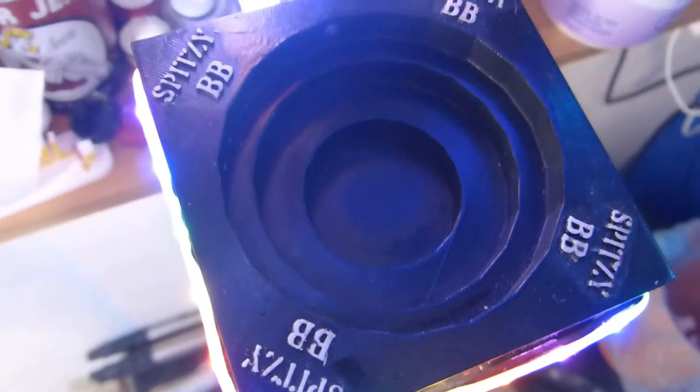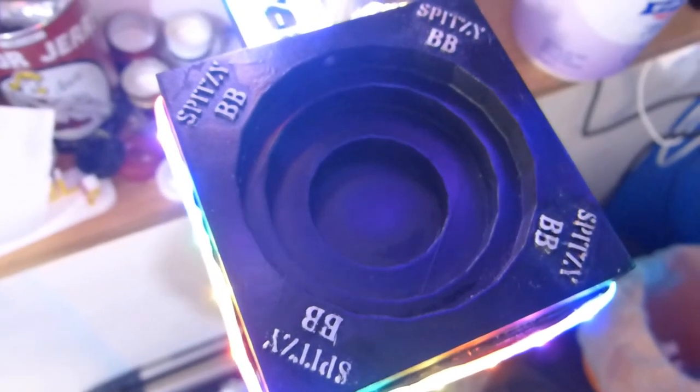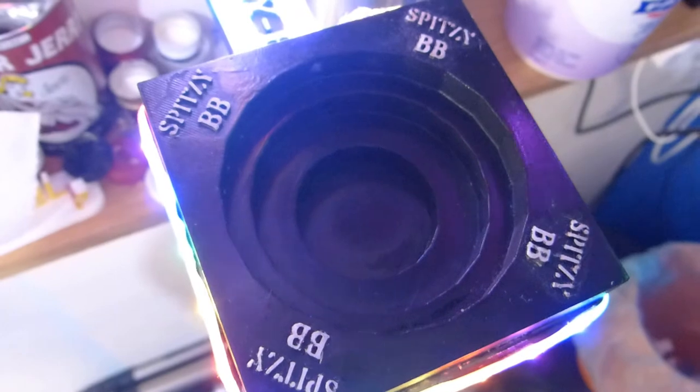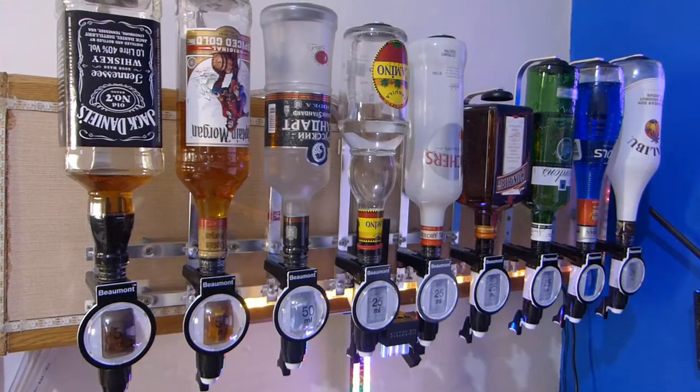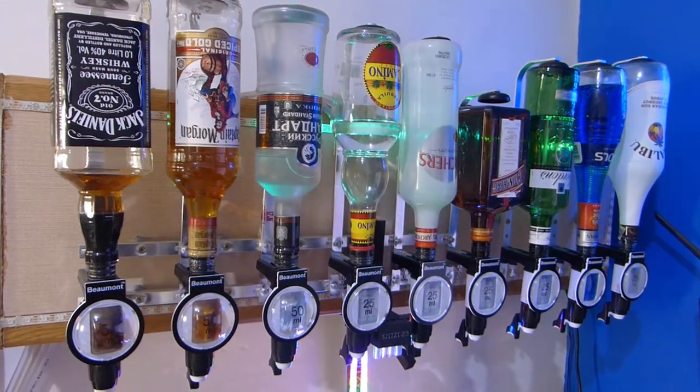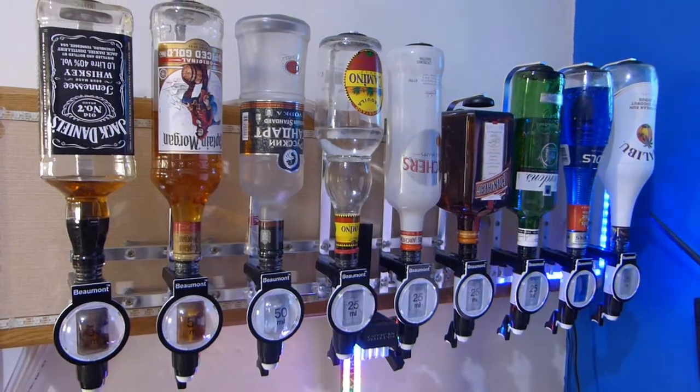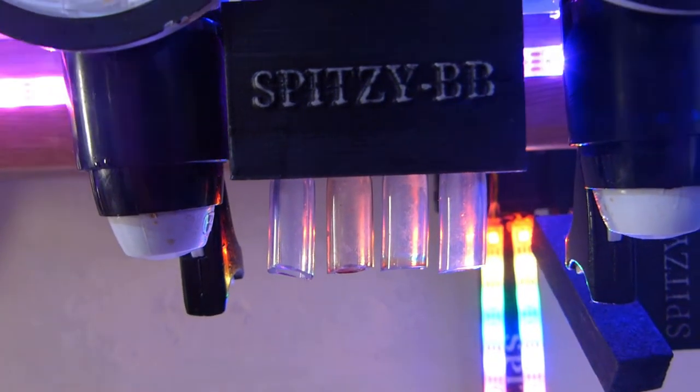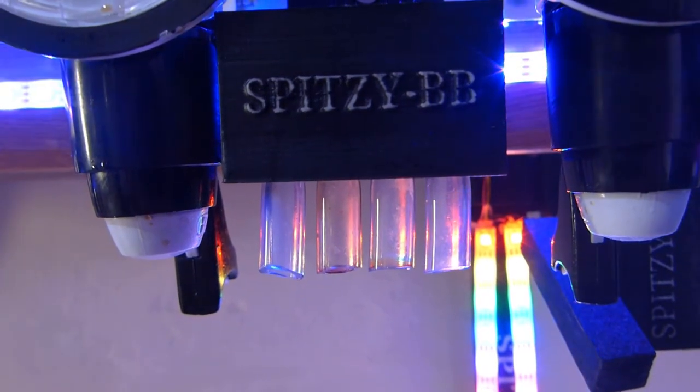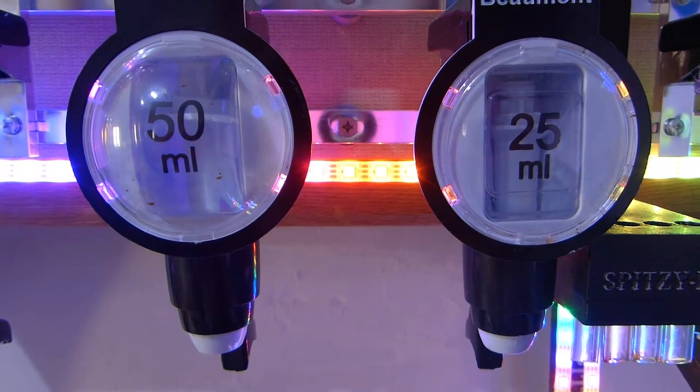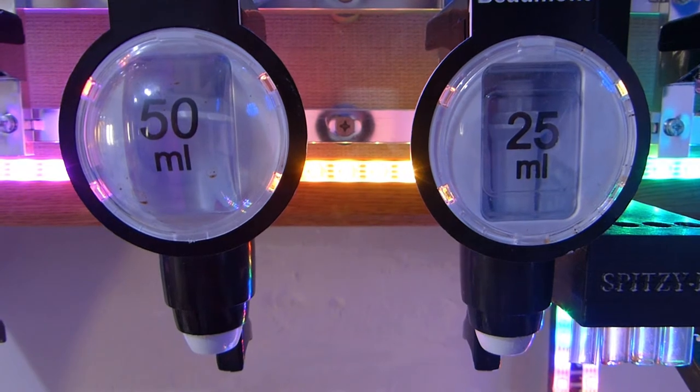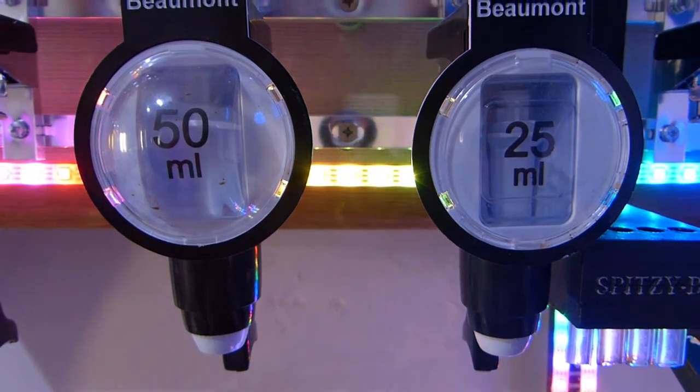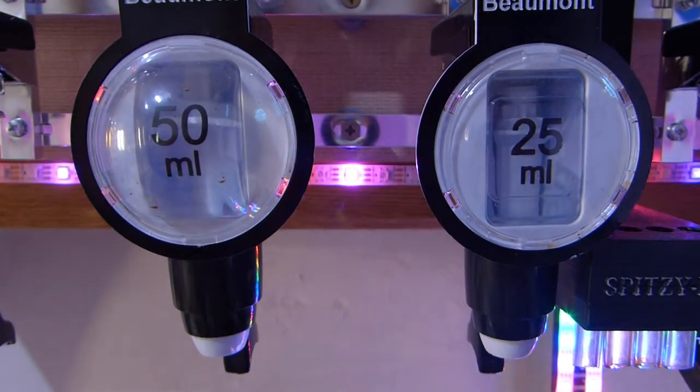I nicknamed the bar Spitsy BB. BB is short for Bar Bot and Spitsy is an old nickname I had when I was younger. The cocktail bar is wall-mounted to save space and can hold a total of 9 bottles and dispense 4 mixers from the middle section through food-grade plastic tubing. The dispensers I'm using are all Bumont metric-type optics, varying in sizes of 50ml and 25ml shots.